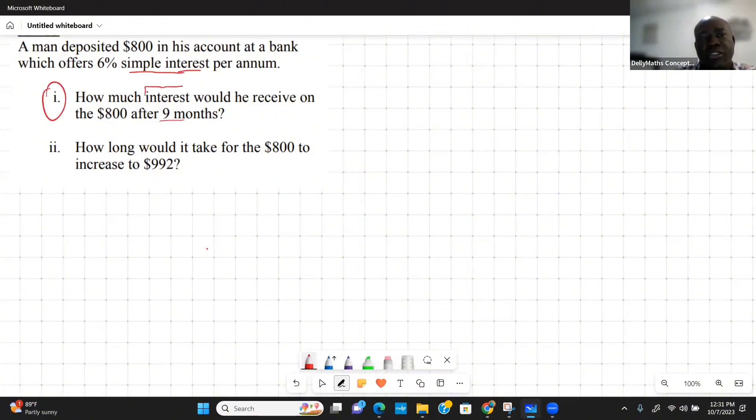There is a formula that we normally use to calculate simple interest and it goes like this: simple interest earned is equal to P, which stands for the principal, times the rate, times the time, all over 100. This should give us what the interest is for that time.